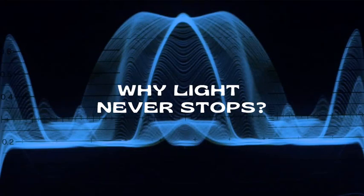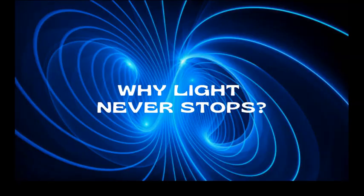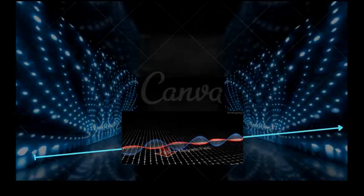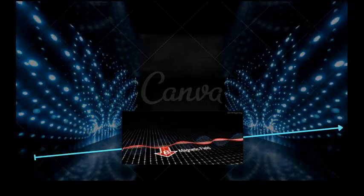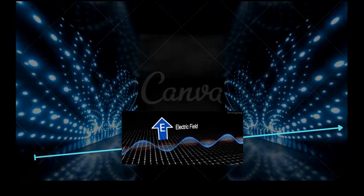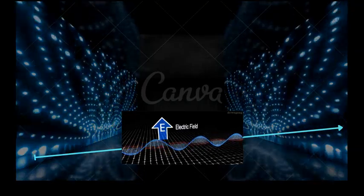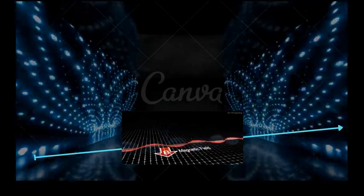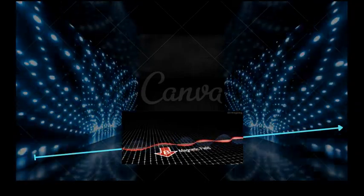To understand why light never stops, we need to explore its true identity as an electromagnetic wave. Imagine a dance between two partners, electric fields and magnetic fields. These fields are invisible, but they are constantly intertwined. When an electric field changes, it generates a magnetic field. And when a magnetic field changes, it creates an electric field. This self-sustaining interaction allows light to move forward without needing any external help.